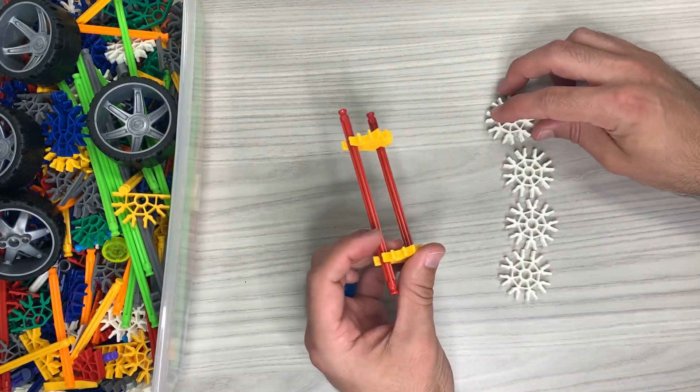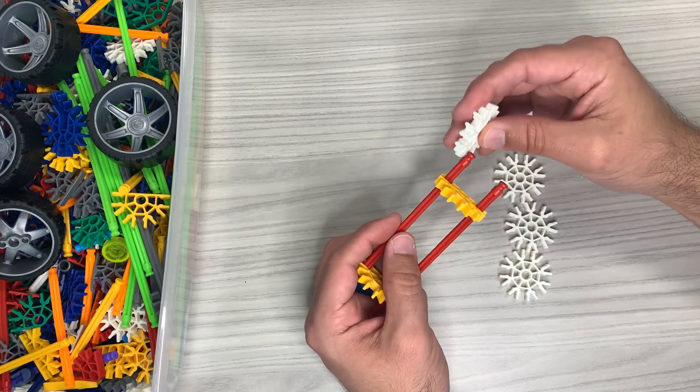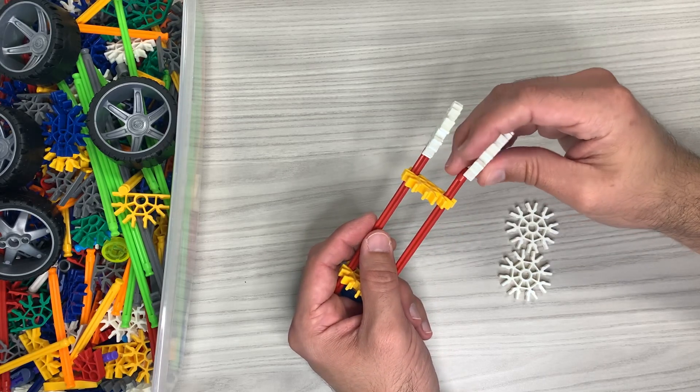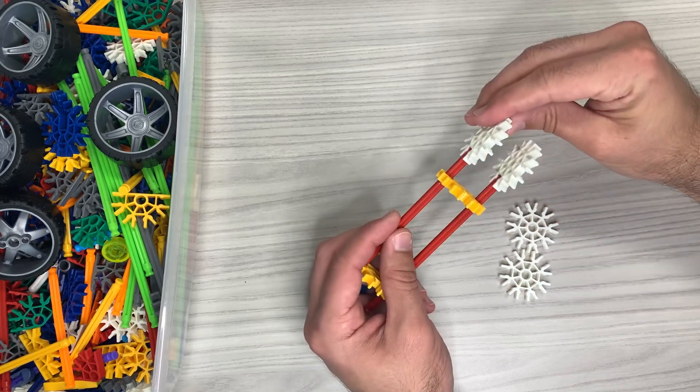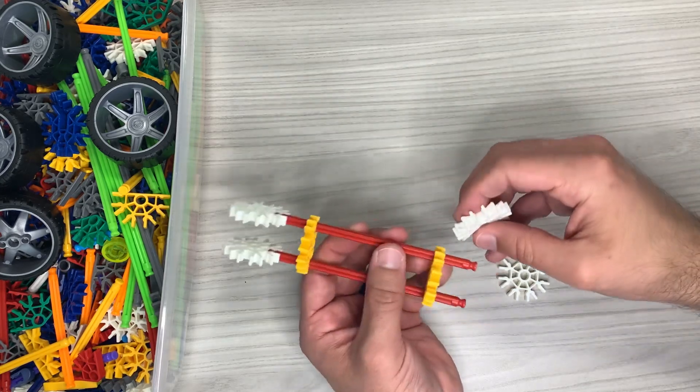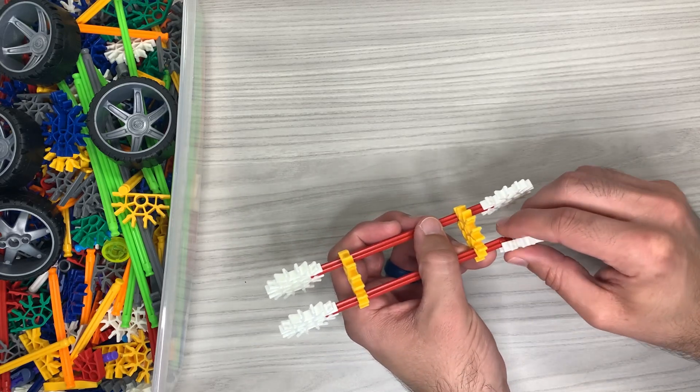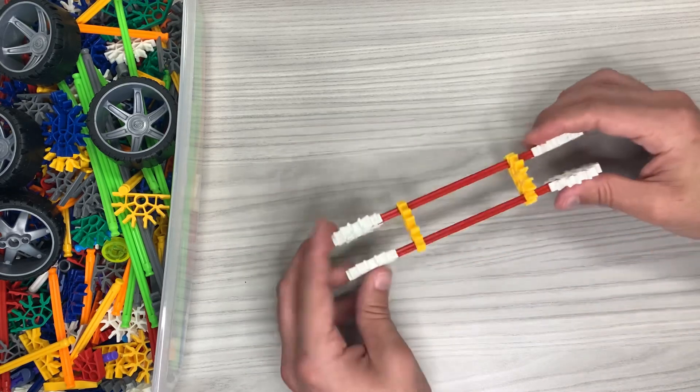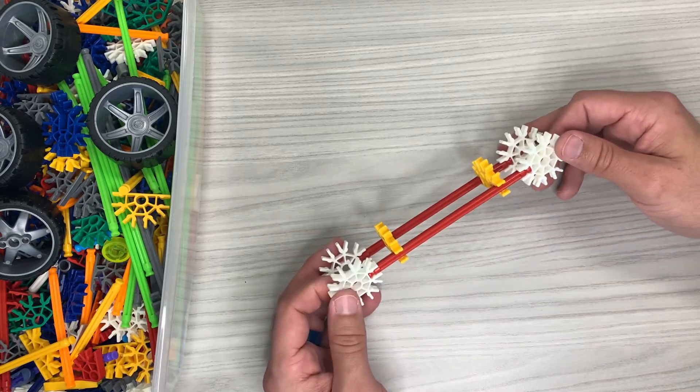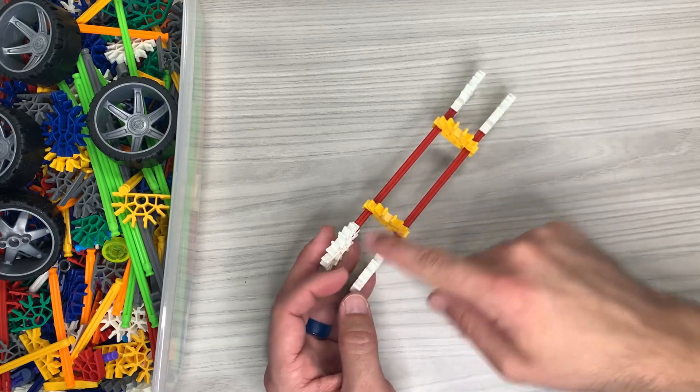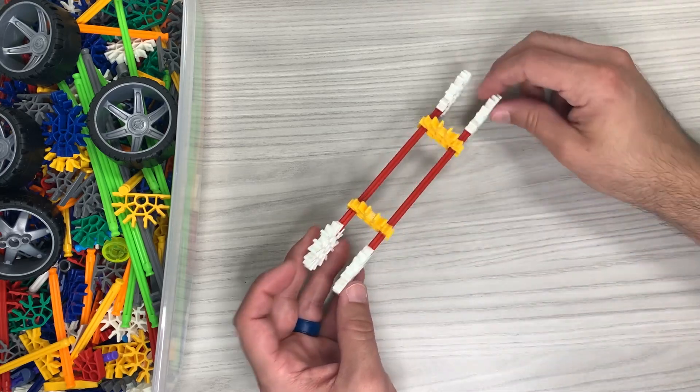Take our four white snowflakes or connectors. I like to call them snowflakes because they look like snowflakes and it's easier for students to understand what I'm talking about when I say snowflakes instead of connectors. They know exactly what I'm talking about. Anyways so now you're going to have two red rods that have these white snowflakes or connectors that kind of look like wheels.